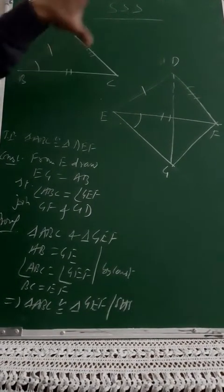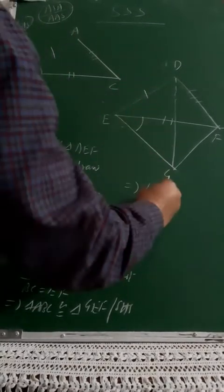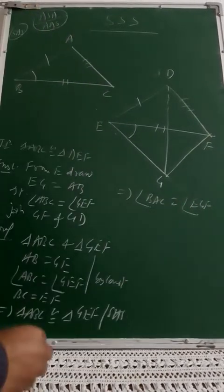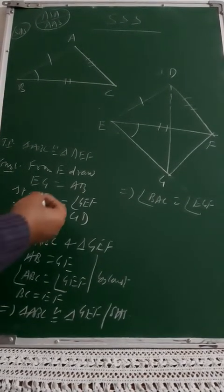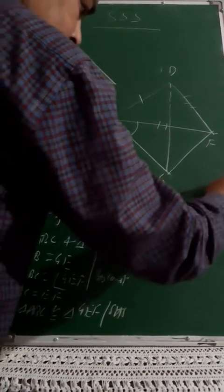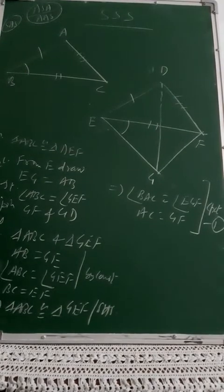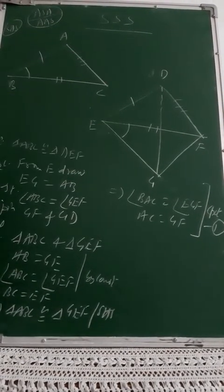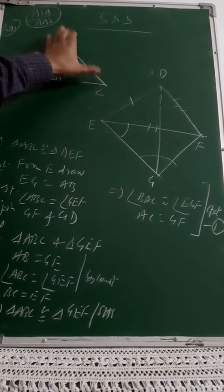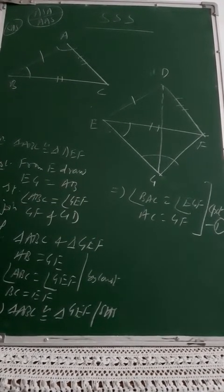Now I have proved this triangle congruent to that triangle. Then by CPCT, angle BAC will be equal to angle EGF, and AC will be equal to GF. I'll give this result number one, because AC equals GF and angle BAC equals angle EGF will be used at a later stage of this proof.